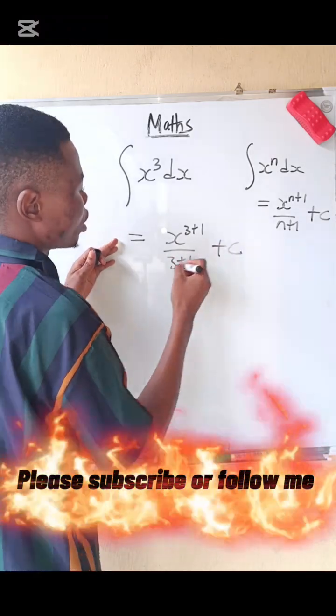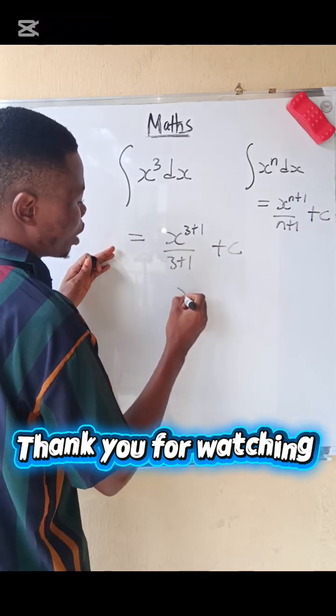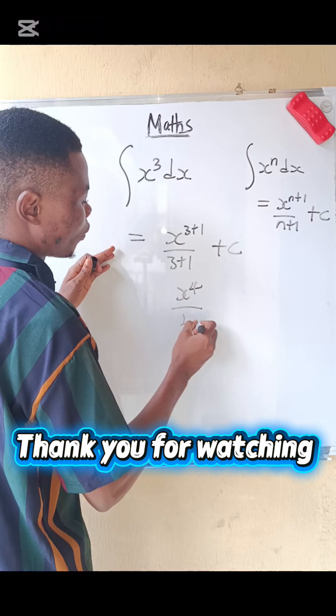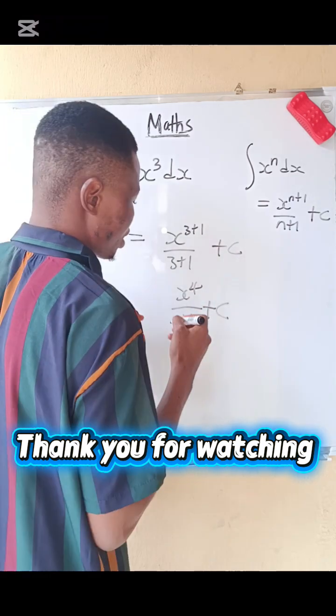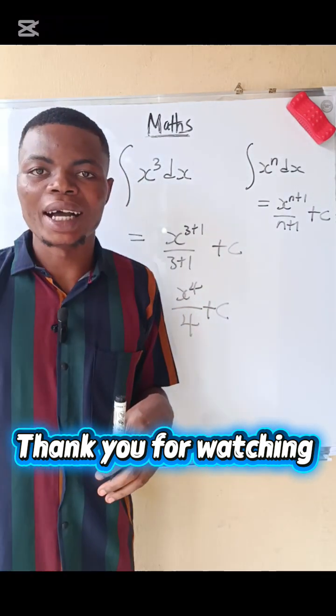plus one, then plus c. So three plus one, that is four. x to the power of four divided by four plus c. This is the answer.